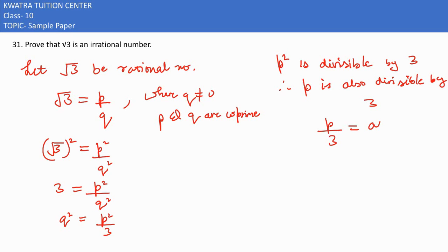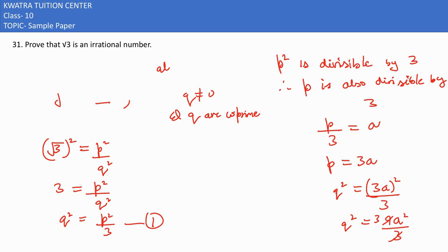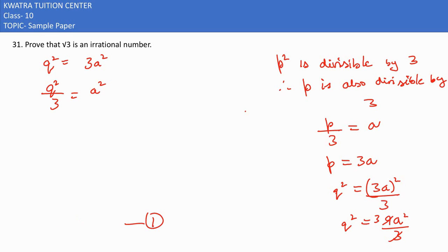Put P = 3a. Squaring, you have 9a²/3. 9 and 3 cancel, you get 3. So Q² = 3a². Now Q²/3 = a². Q² I can understand is divisible by 3.